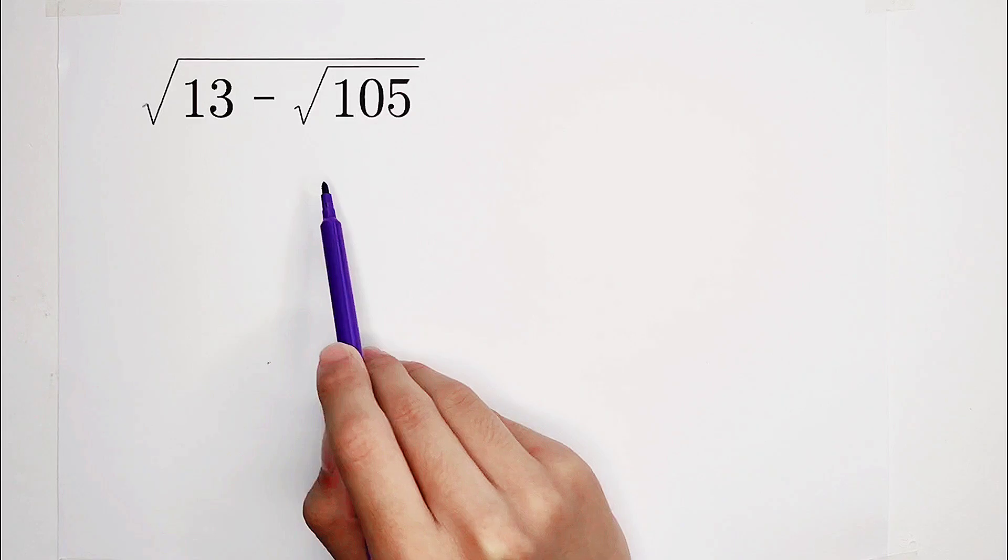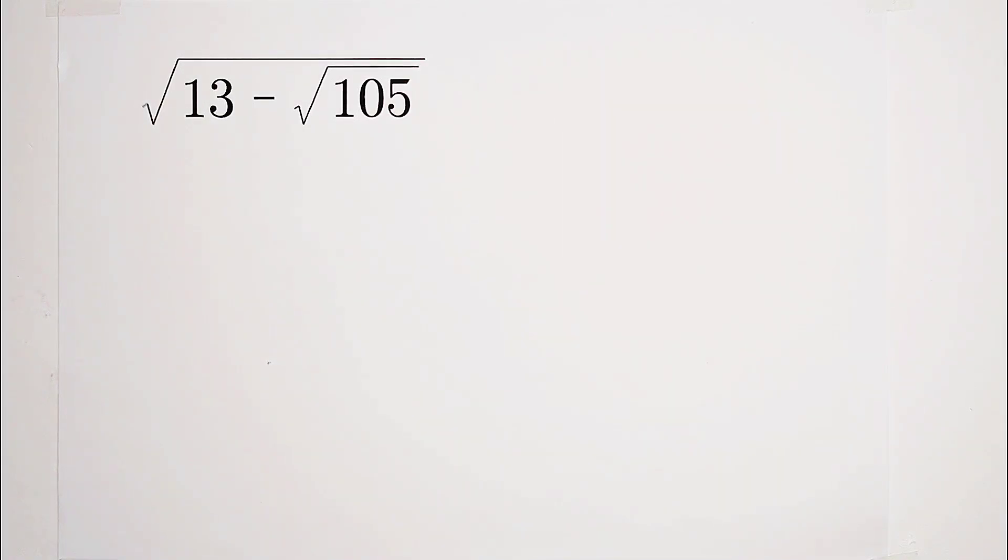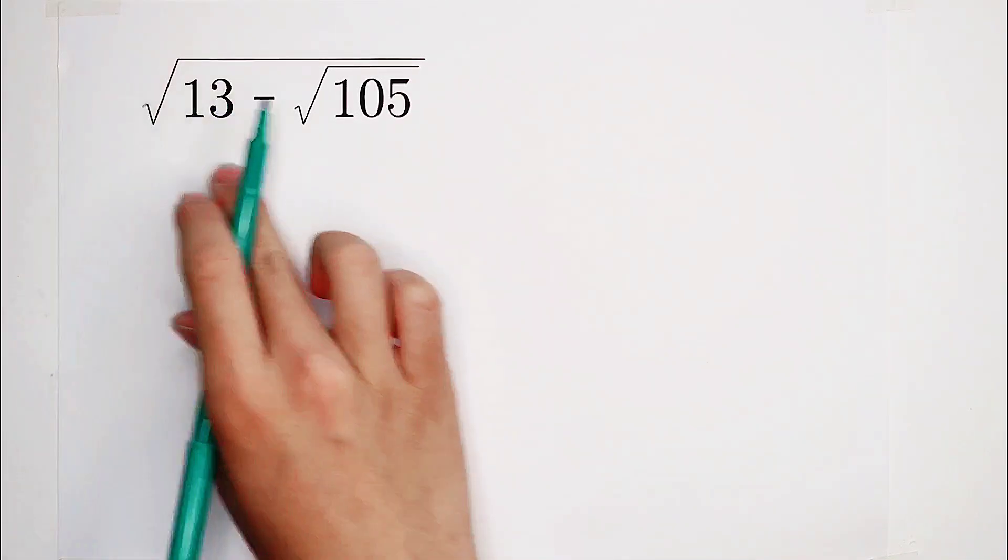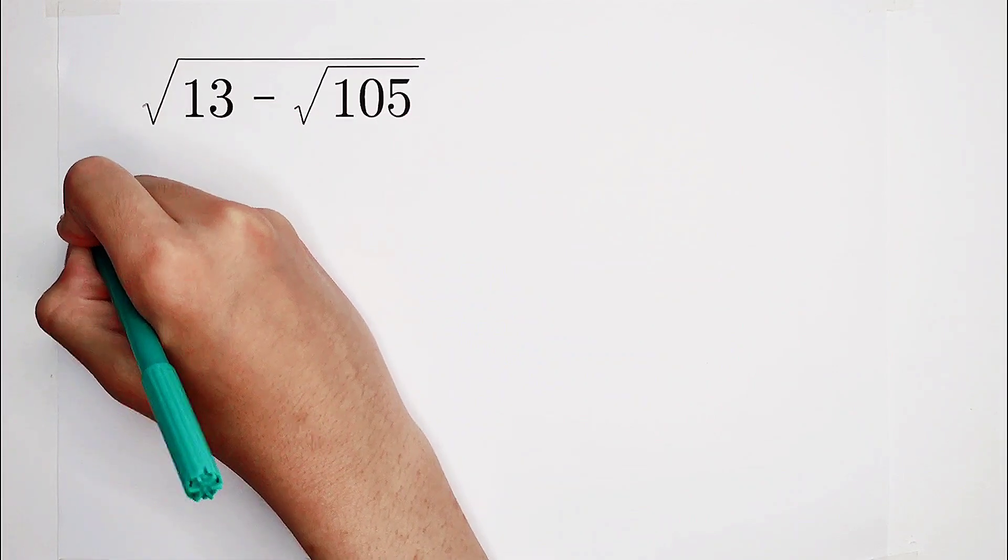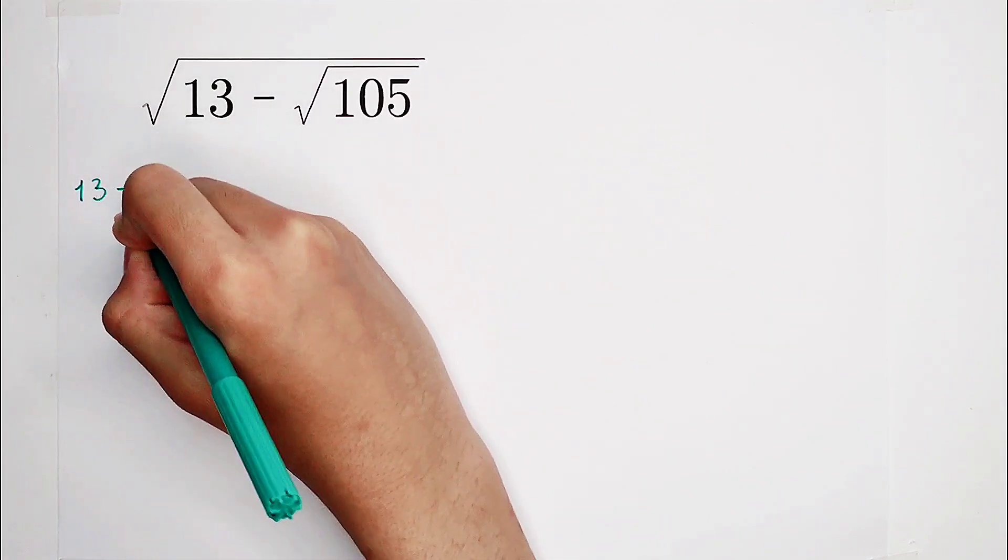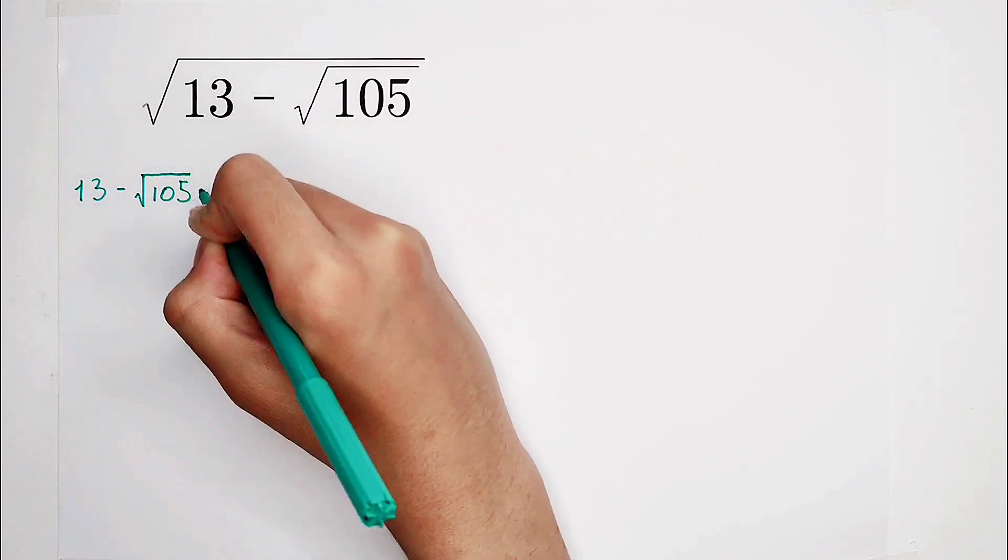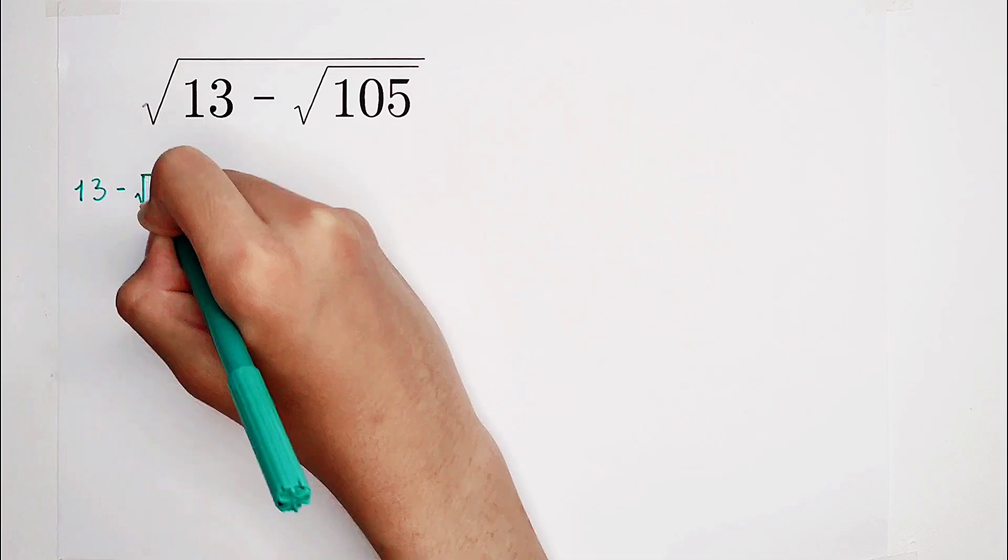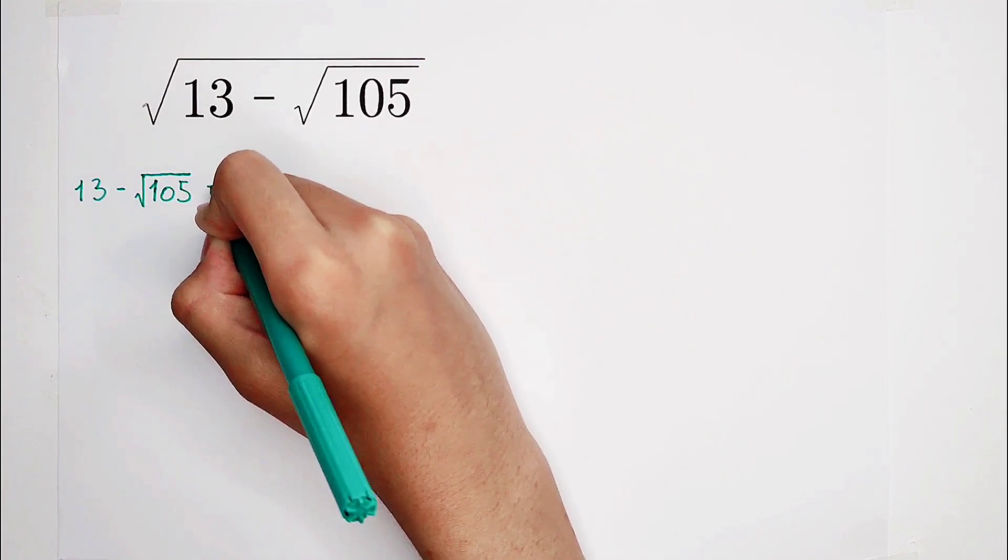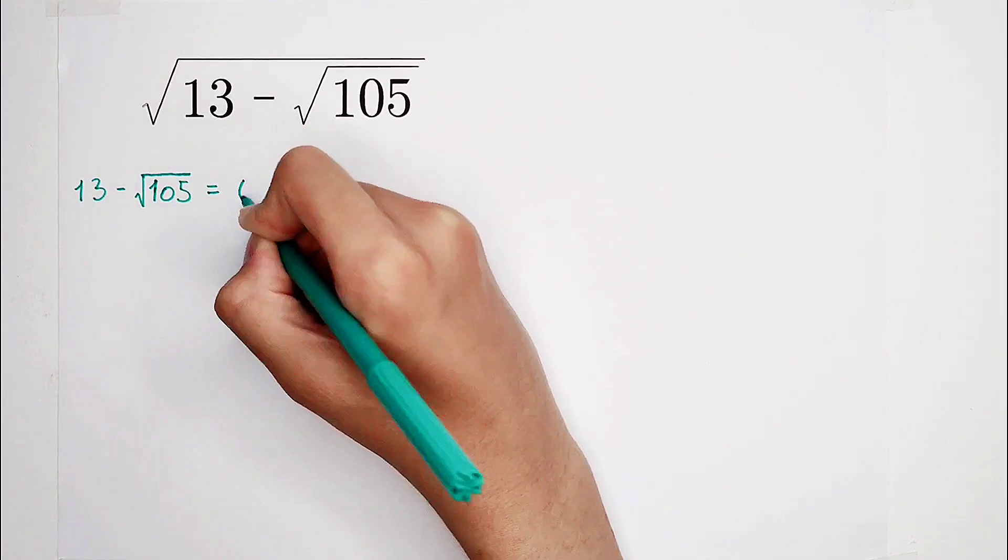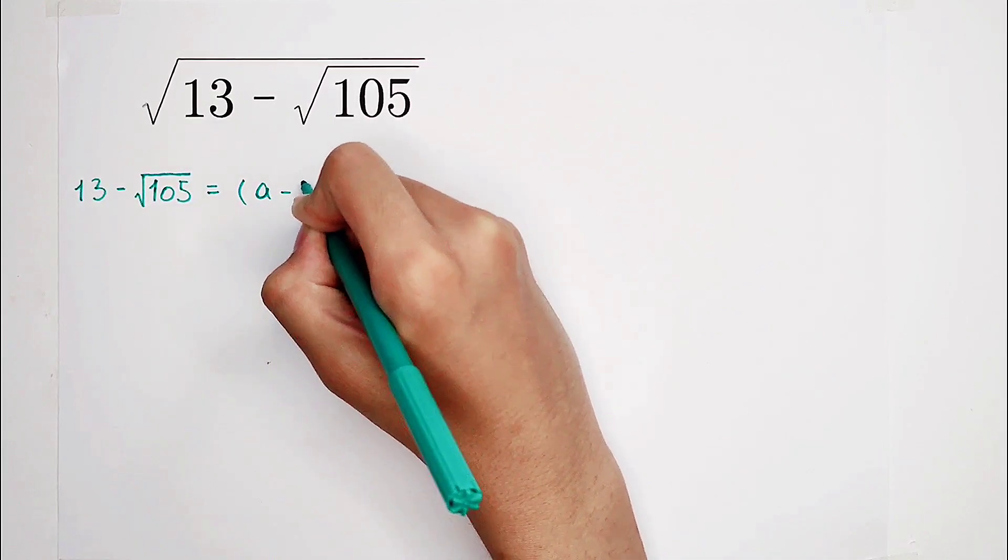Of course, firstly, for the simplifying, we always hope that the thing under the square root or the term under the square root can be written as a squared term.